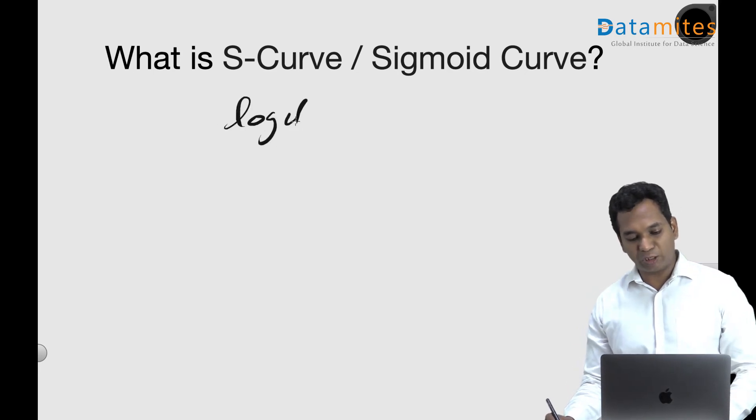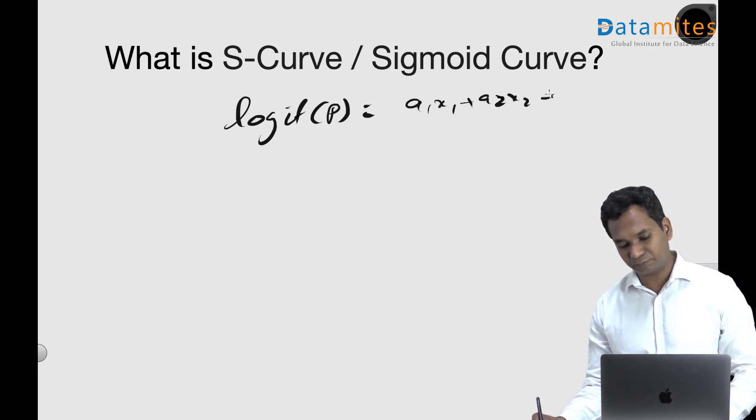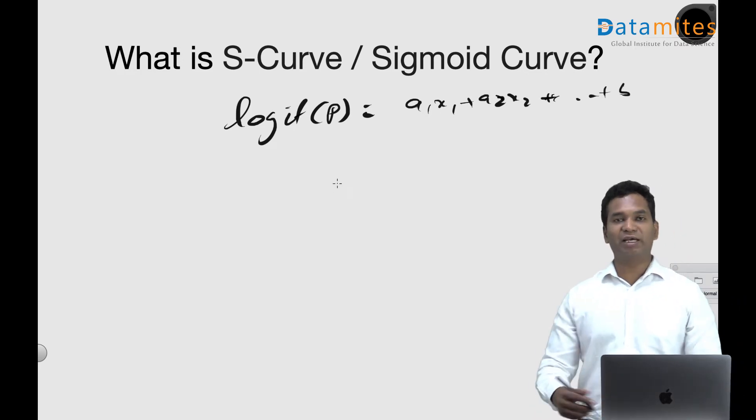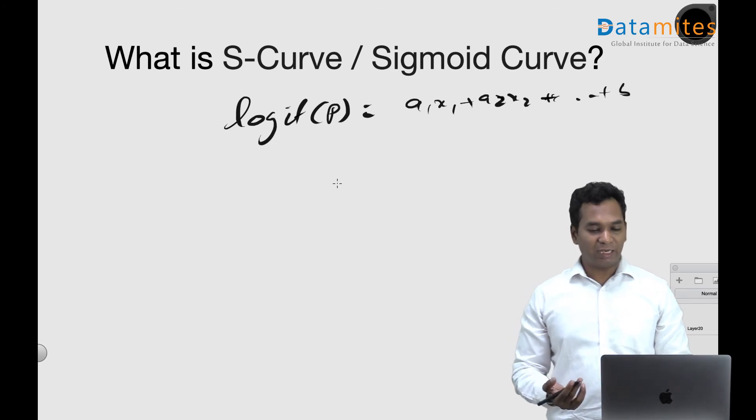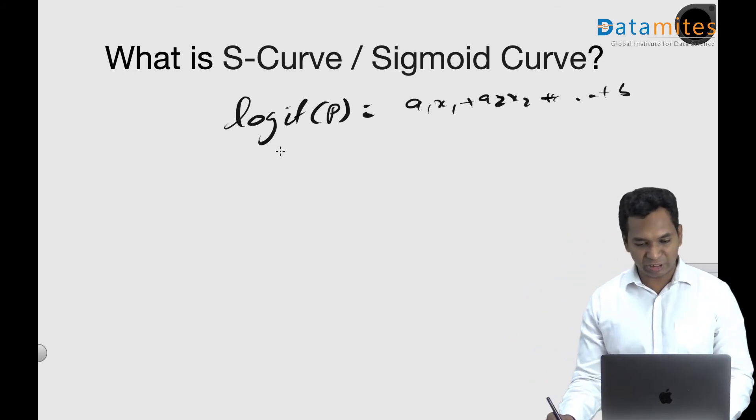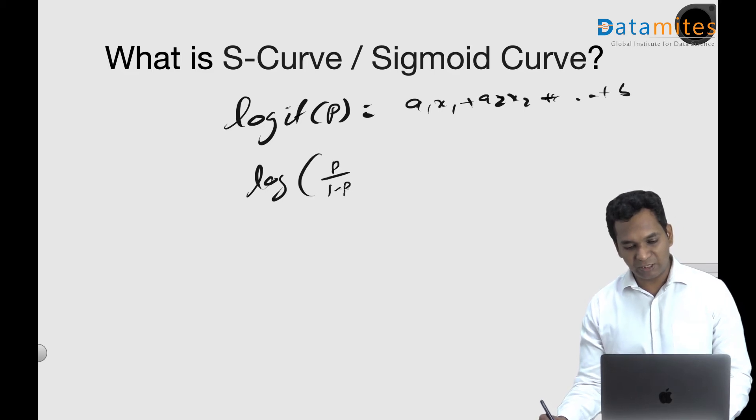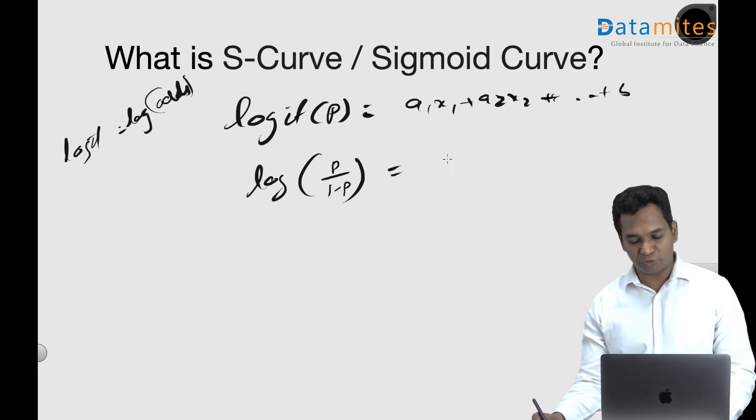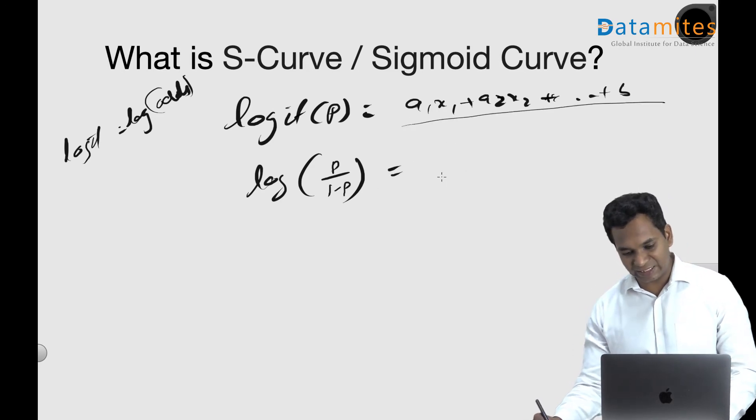So by equating the logit of the probability to a linear equation like a1*x1 plus a2*x2, we could actually convert and derive p, and that should be the sigmoid function. A quick derivation: this can be written as log of p by (1 minus p) because logit is essentially a log of odds. Odds is nothing but p by (1 minus p) equals to, I'm going to call this entire thing as simply z.